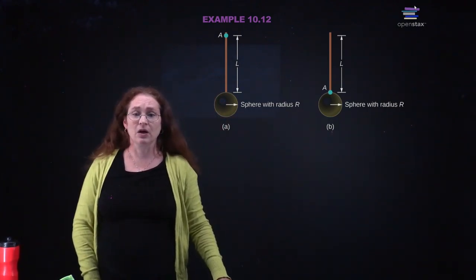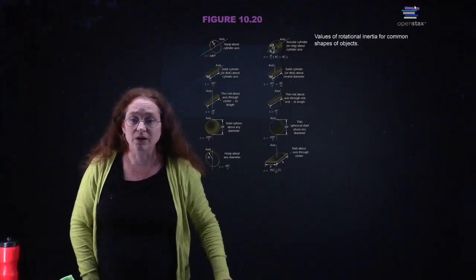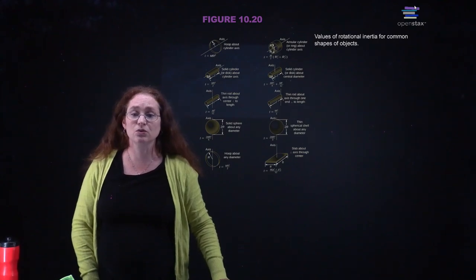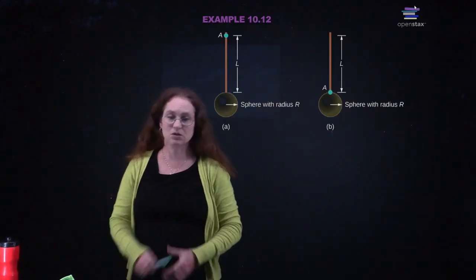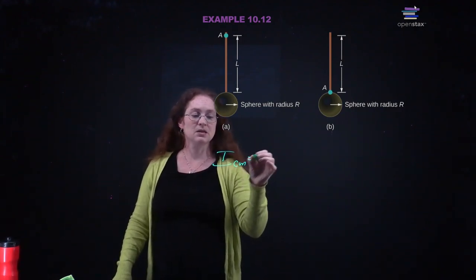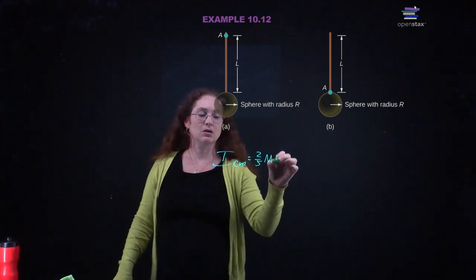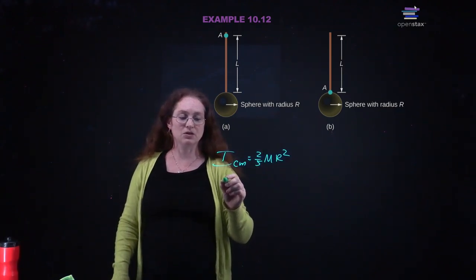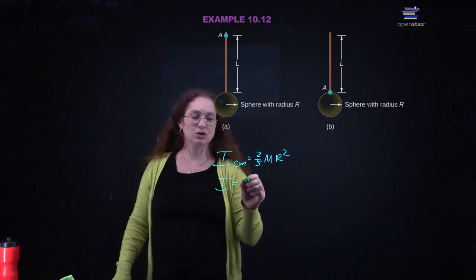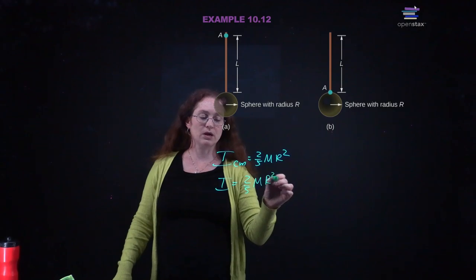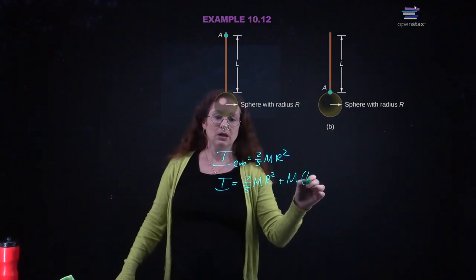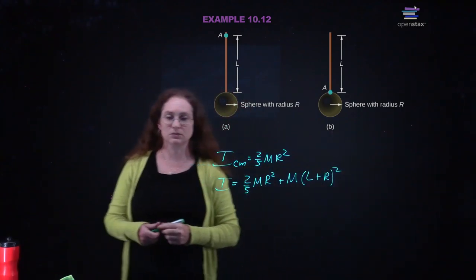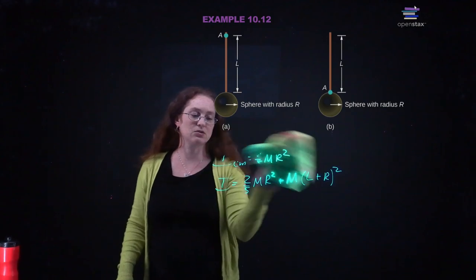For spheres, the moment of inertia is two-fifths mr². So the I center of mass is 2/5 mr². My distance is again l plus r. So my total moment of inertia is 2/5 mr² plus m times (l + r)². I will leave simplifying as an exercise for the student.